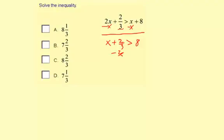Now we're going to subtract 2/3 from both sides. So x is greater than, because the 2/3 minus 2/3 makes 0, 8 minus 2/3.